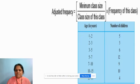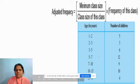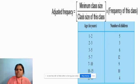Now let us study this example. The class intervals are continuous, but the class size is different across intervals. So I cannot represent this data directly as a histogram — I need to modify it and get a new frequency. The new frequency is obtained by the formula: minimum class size divided by class size, multiplied by frequency.